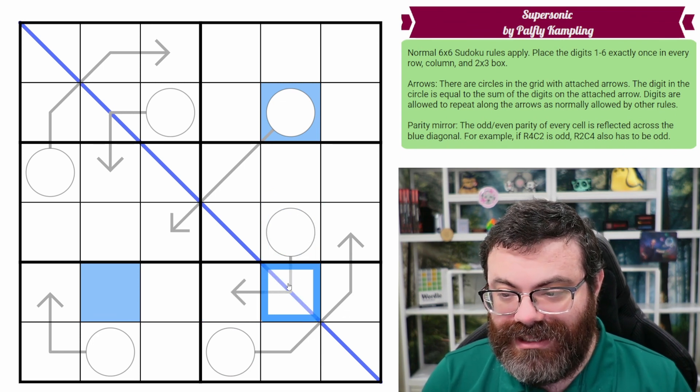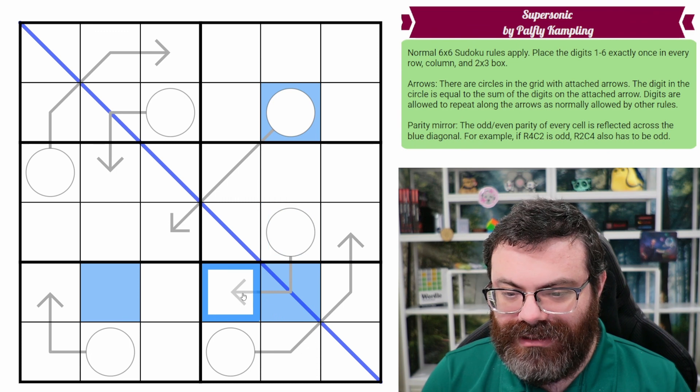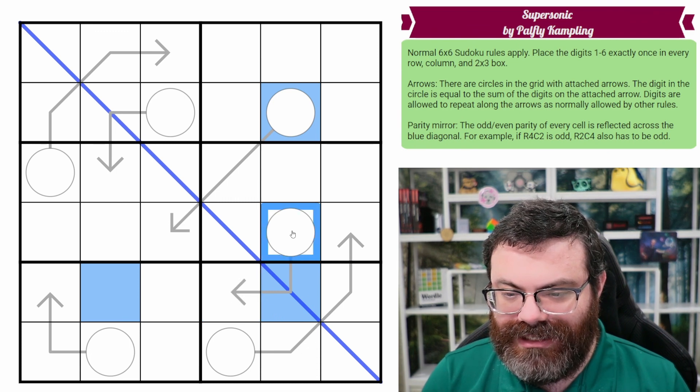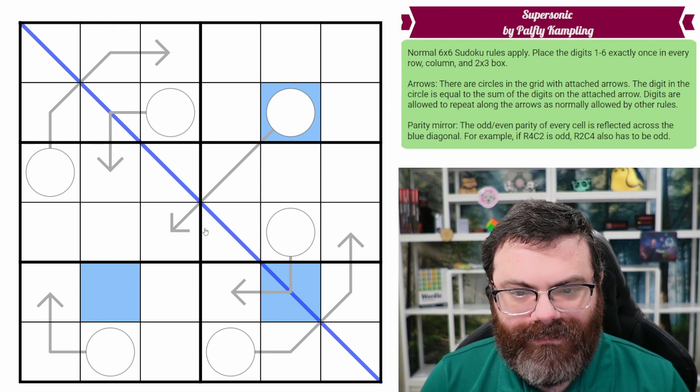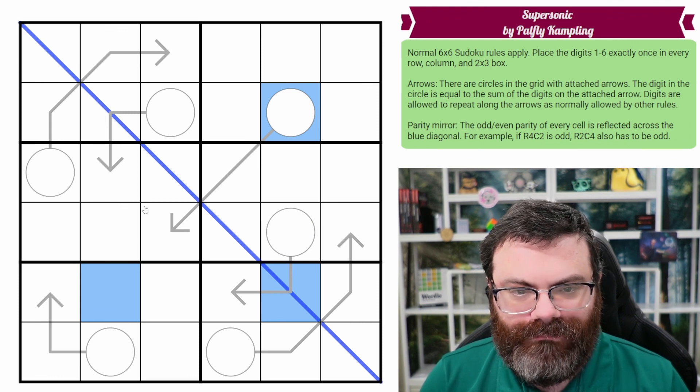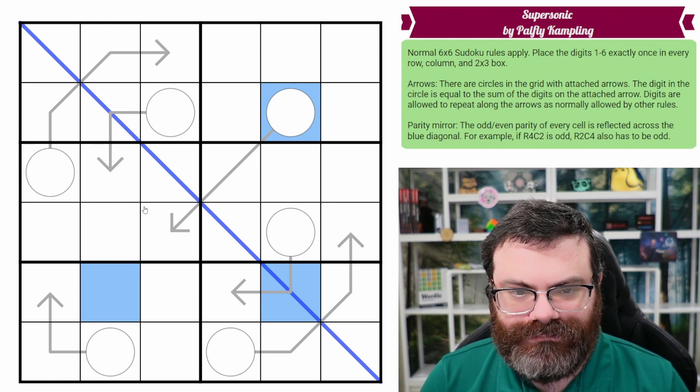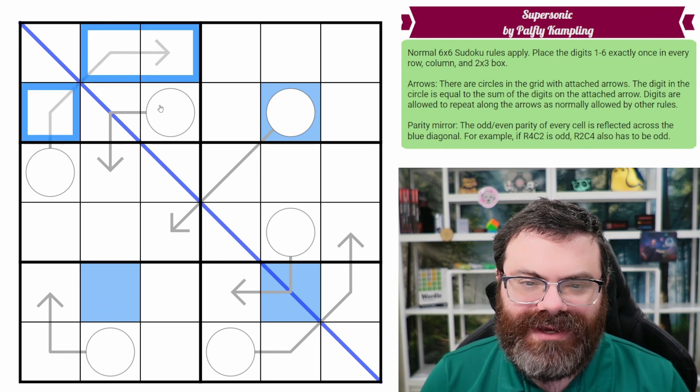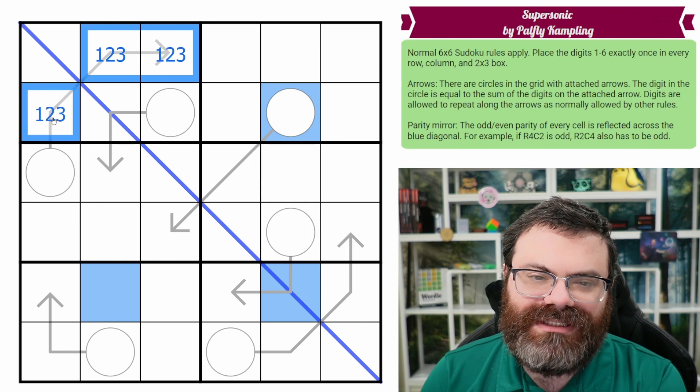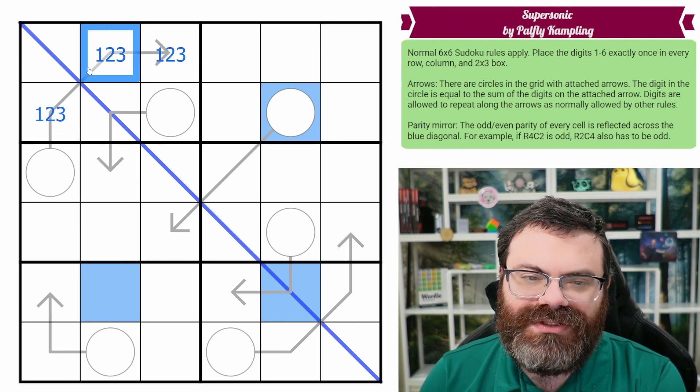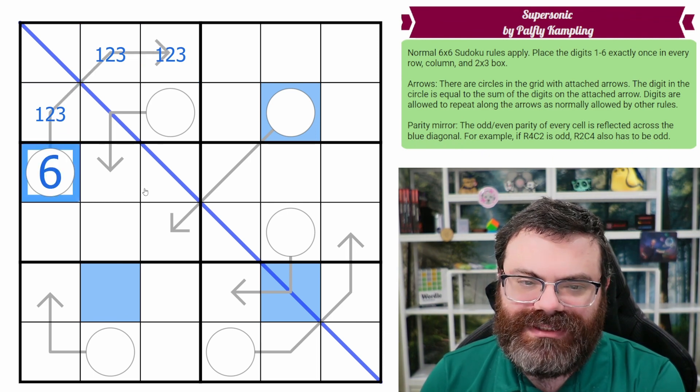Because these are the same parity, this has to be even to preserve the parity when we add it to this cell to get this one. But that doesn't reflect anywhere. Let's see. Oh, we have a digit right away, which I should have realized. The minimum that you can put in these cells is one, two, three. One plus two plus three is six. So we fill a six here.